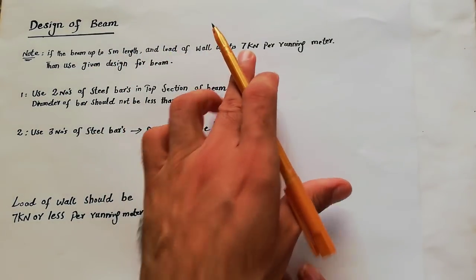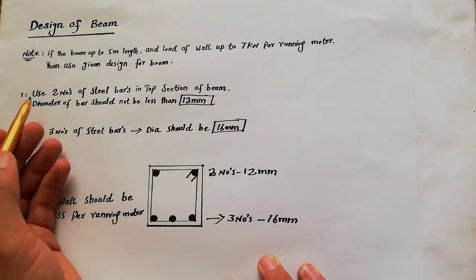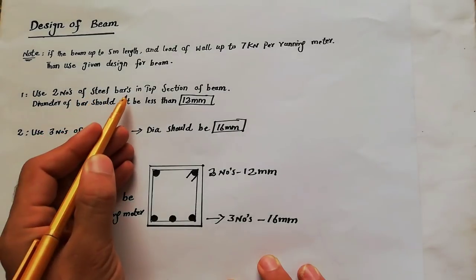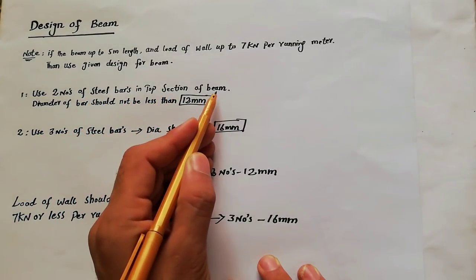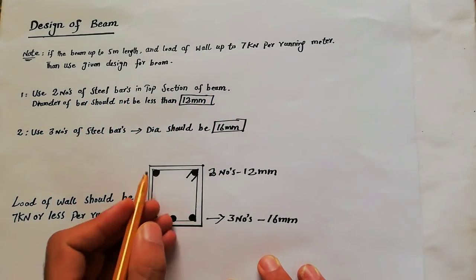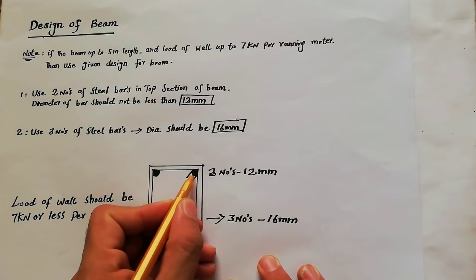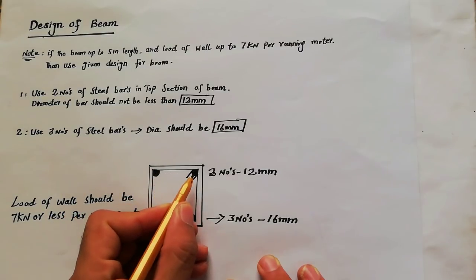If your load is 7 kilonewton or less, use two numbers of steel bars at top section of the beam. Use two numbers of steel at the top section of the beam.